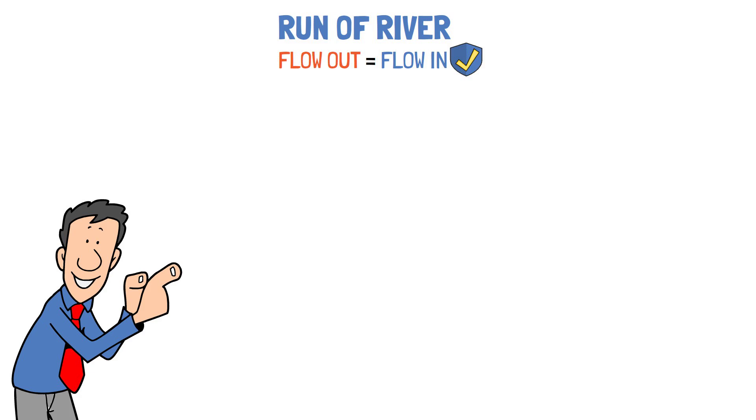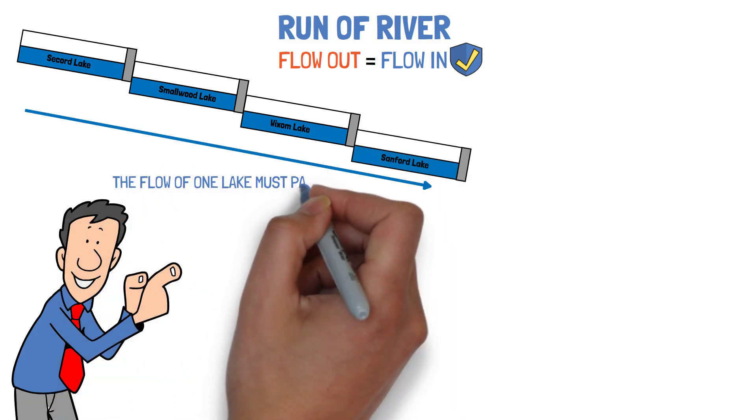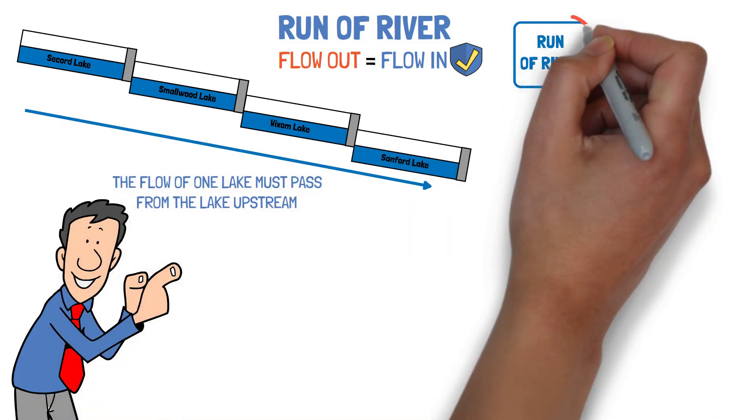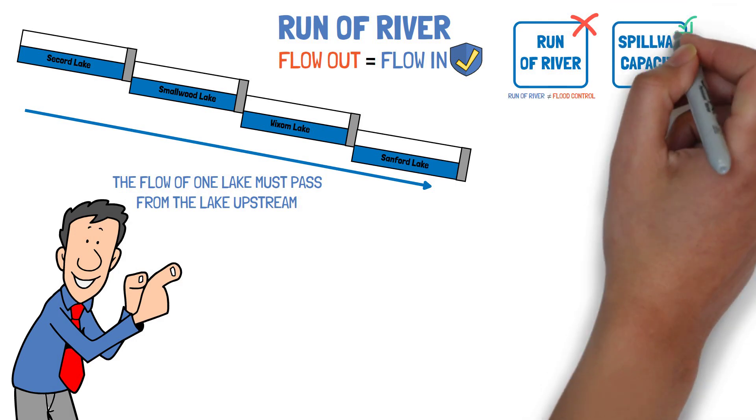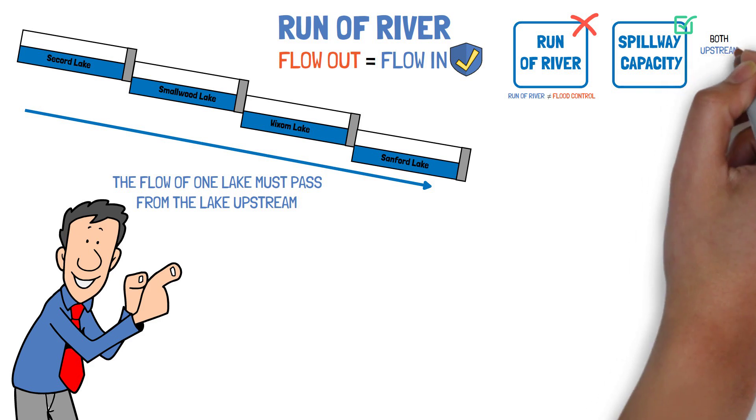Run of river is managed across all lakes. At the tailrace of each dam, the next lake begins. The flow of one lake must pass from the lake upstream. Run of river does not control flooding. Spillway capacity addresses flooding risk both upstream and downstream of a dam.